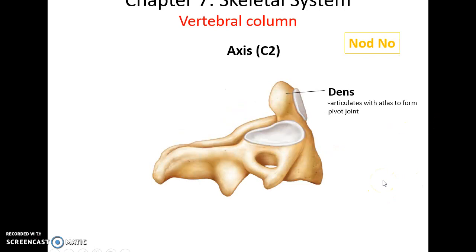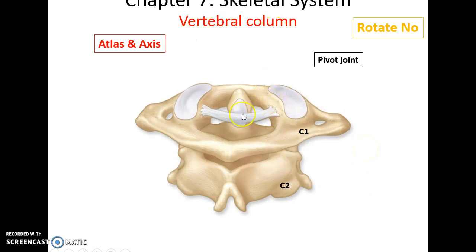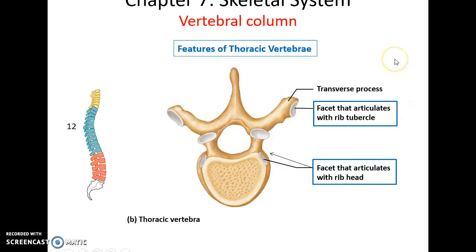The axis, the second cervical vertebra, has a process that sticks up called the dens. It articulates with the atlas to form a pivot joint that lets us shake our head no.